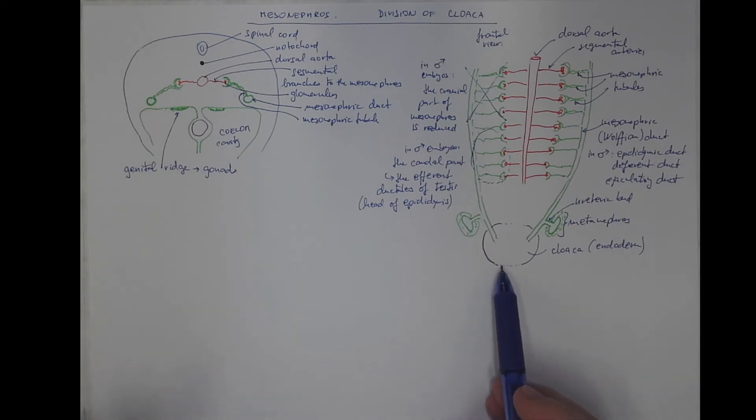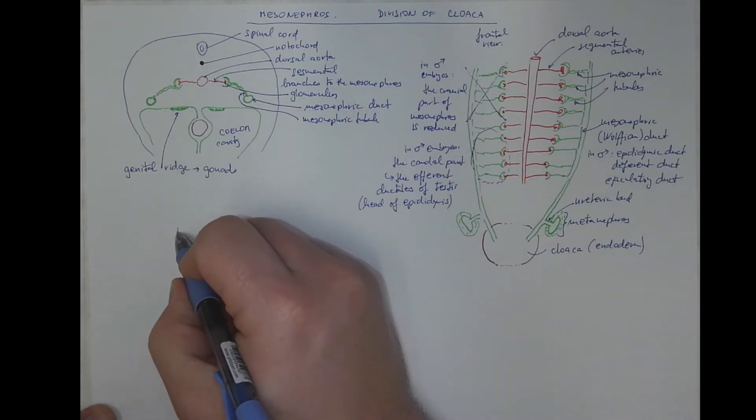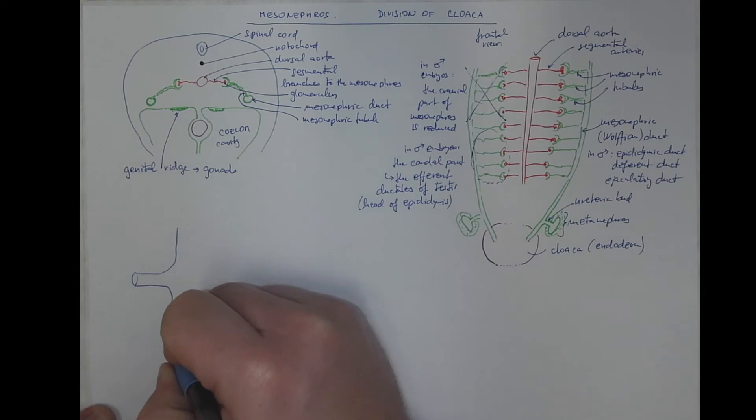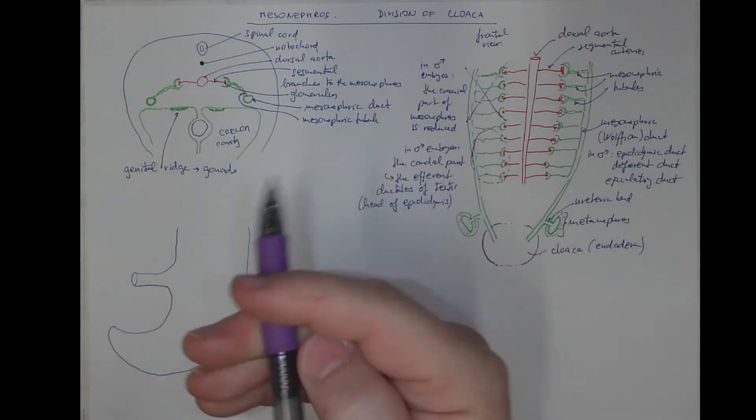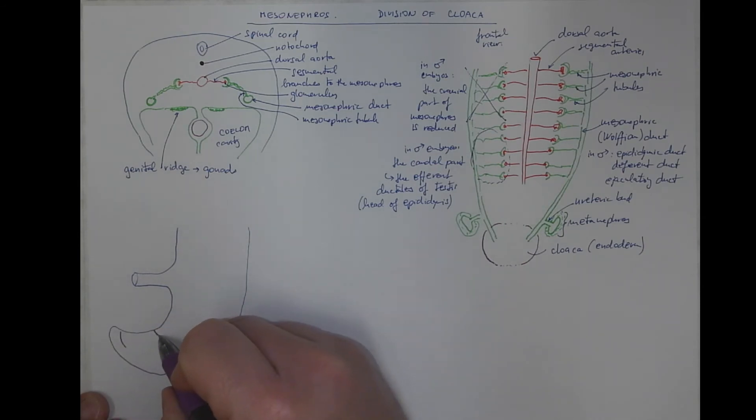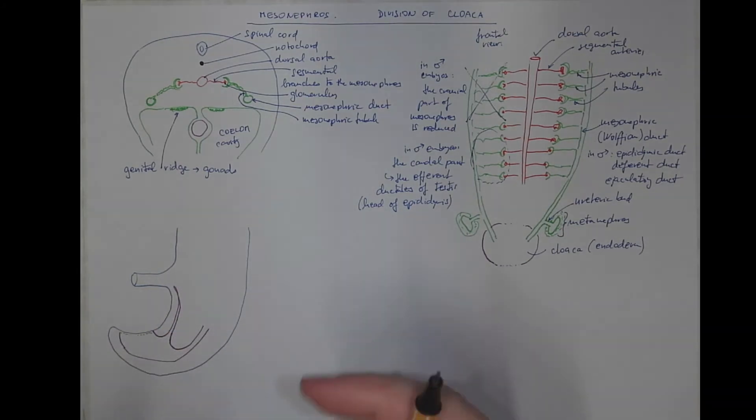To proceed further, we need to explain what happens with the cloaca, because it does not stay like this. In a sagittal section, we would see the situation before the cloaca is divided, and after. Before it's divided, we got the cloaca here, we got the allantois going towards the umbilicus, and we got the rest of the hindgut. Here will be the temporary cloaca membrane, and the mesonephric duct with the ureteric bud of the metanephros.